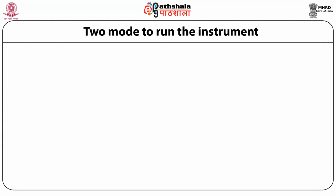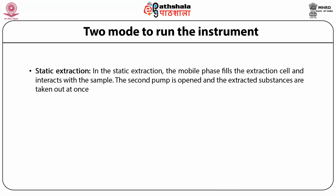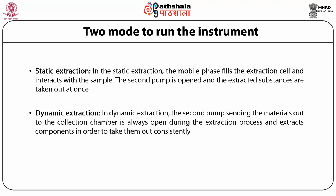There are two principal modes to run the instrument. The first is static extraction. In static extraction, there are two distinct steps: first, the mobile phase fills the extraction cell and interacts with the sample; second, the second pump is opened and the extracted substances are taken out at once. The second mode is dynamic extraction. In dynamic extraction, the pump sending material out to the collection chamber is always open during the extraction process.